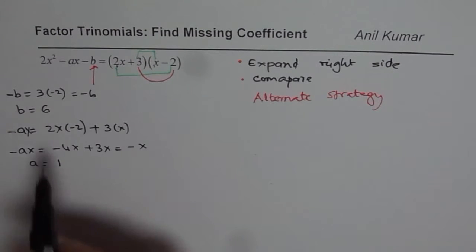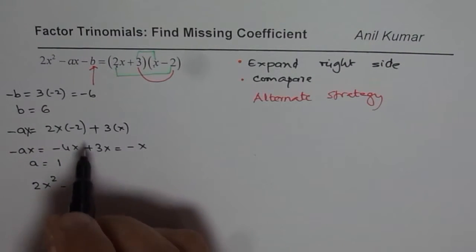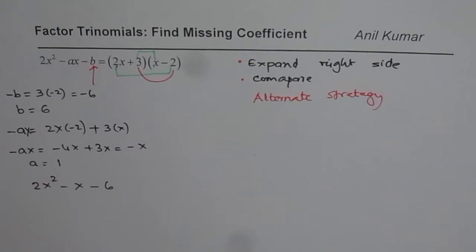You get the idea? So you get your answer: the expression should be 2x² - x, and b is 6, so minus 6. That should be your left side.